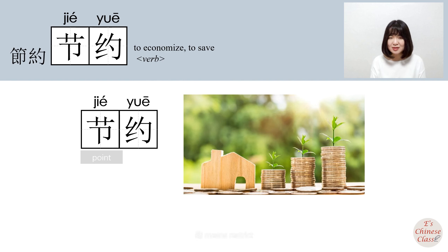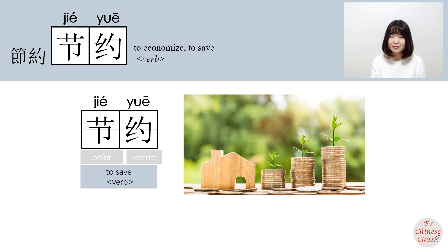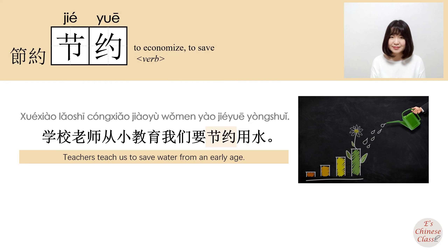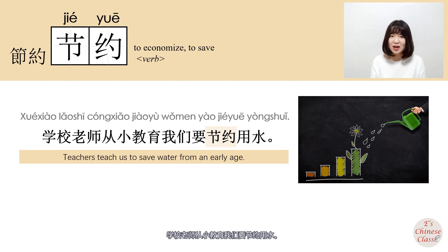节 means point, 约 means restrict, so 节约 means save. 学校老师从小教育我们要节约用水。 (School teachers educate us from a young age to save water.)